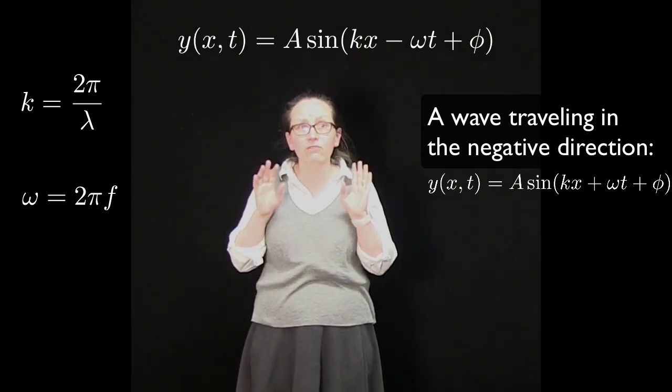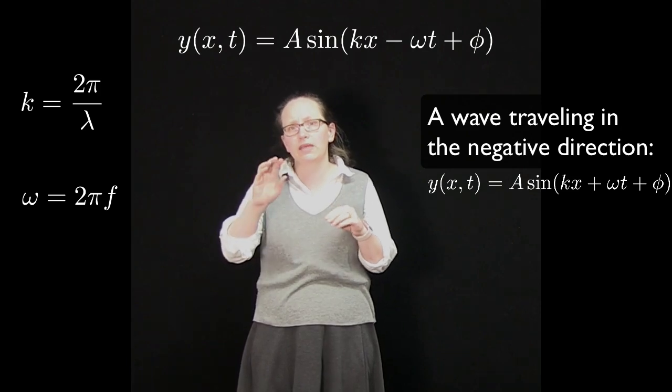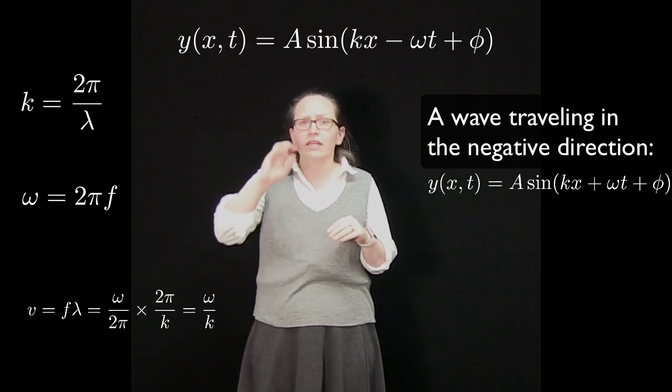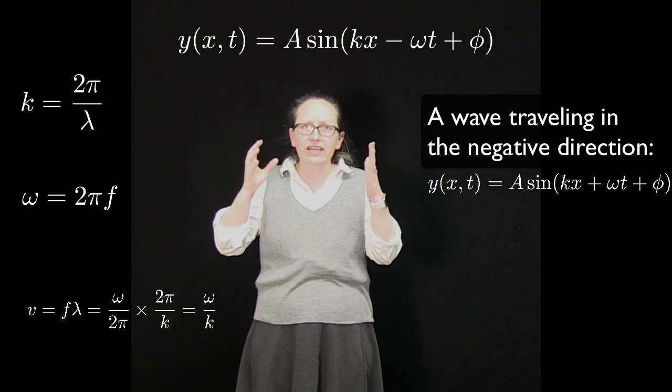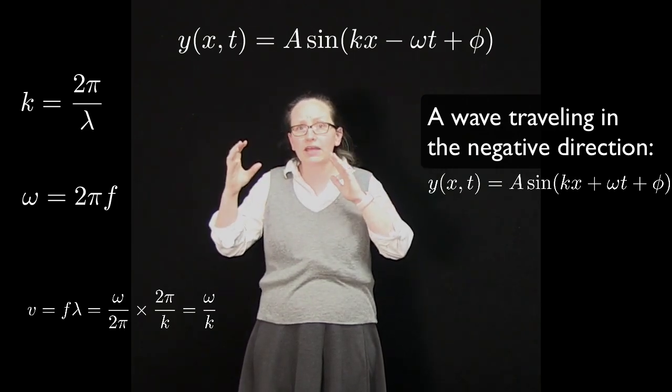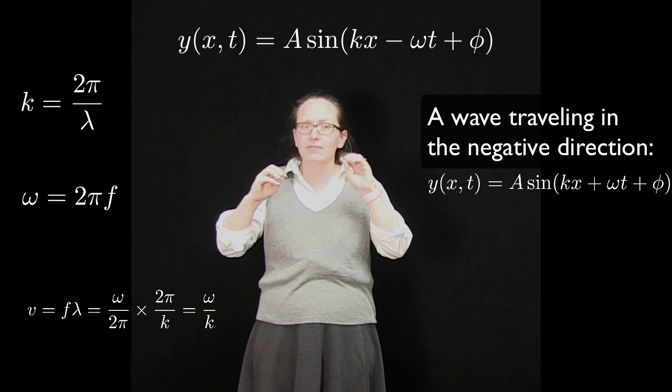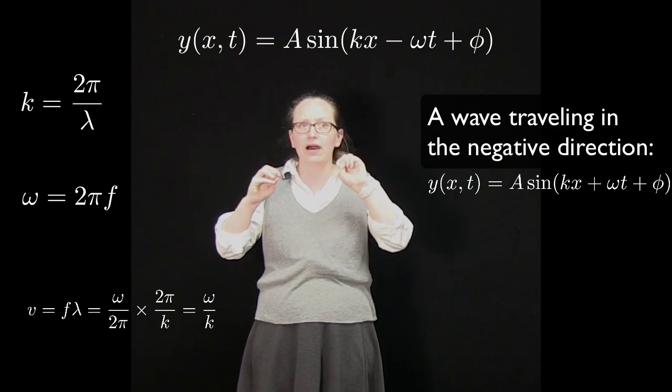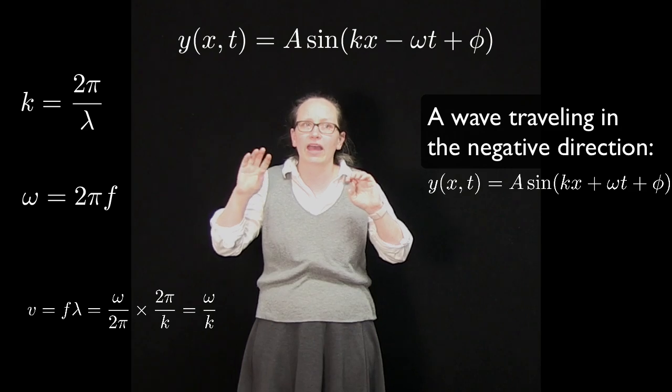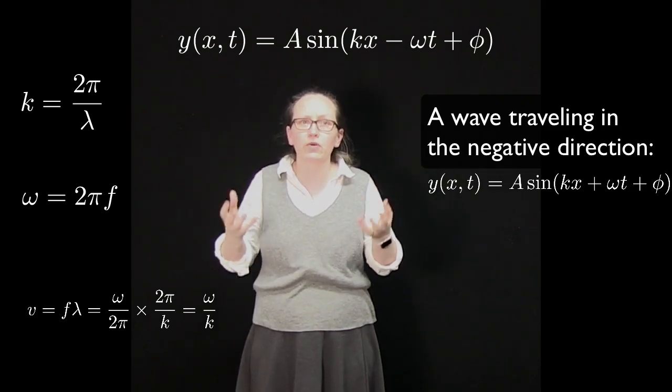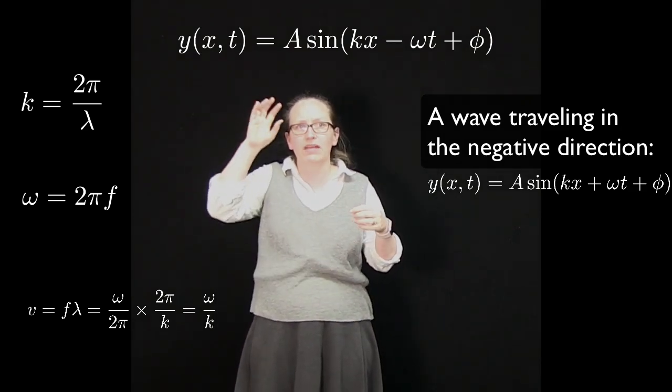Another thing that we can get from this equation is the speed of the wave. We know that v = fλ is the speed, but by looking at our relationships for k and ω, you can see that fλ = (ω/2π) × (2π/k), which is equal to ω/k. So the speed of the wave is actually given by ω/k.